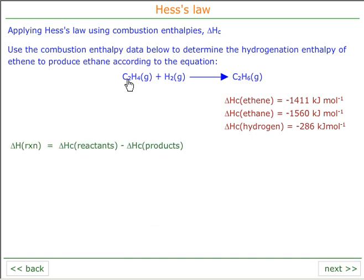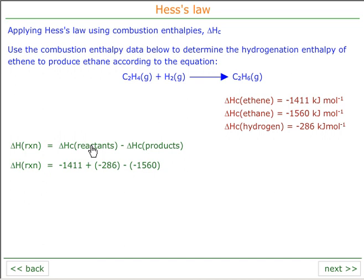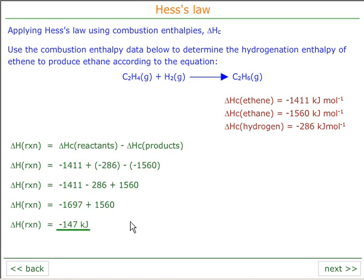Taking an example: we have ethane plus hydrogen gives ethane, with enthalpies of combustion given. The enthalpy of reaction equals the enthalpy of combustion of the reactants minus the enthalpy of combustion of the products. In this case, it's minus 1411 plus minus 286, minus minus 1560 — that is, the enthalpy of combustion of ethane plus the enthalpy of combustion of hydrogen, minus the enthalpy of combustion of ethane. Working through, this comes to minus 147 kilojoules — the enthalpy of the reaction between hydrogen and ethane to make ethane.